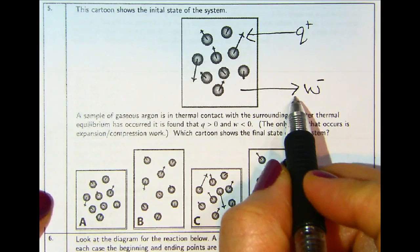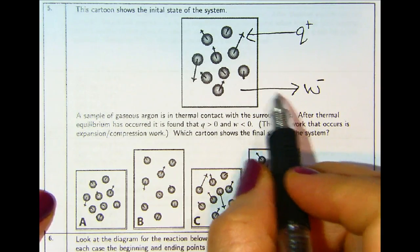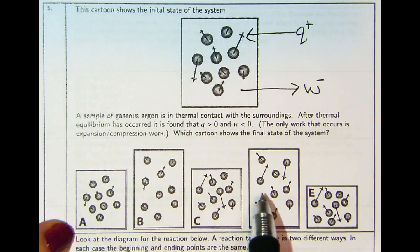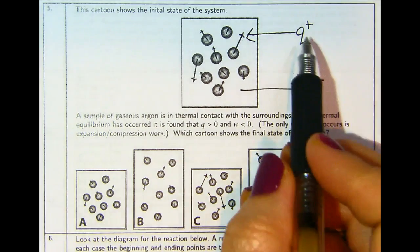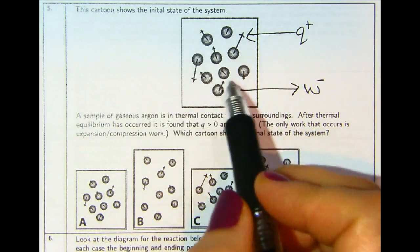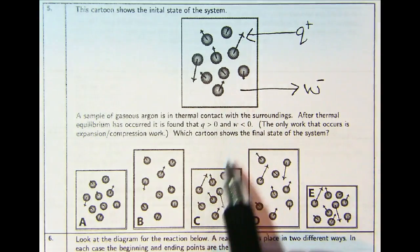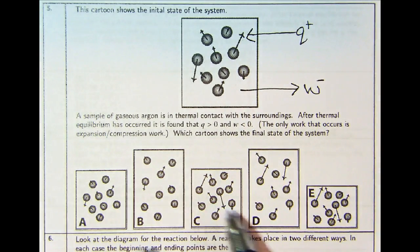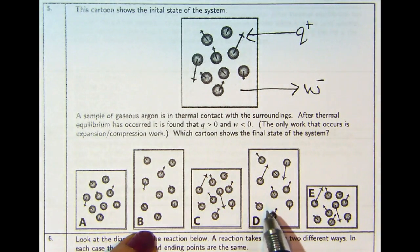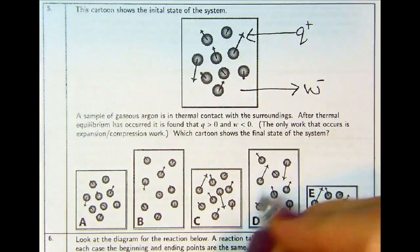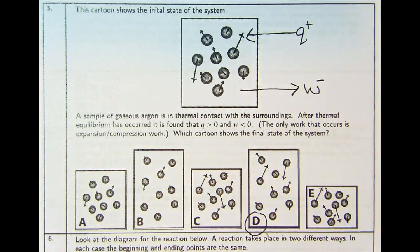So you're looking for an answer that has a larger volume. Some options have about the same volume, one has less volume, and some have more. It's down to B or D. Because it absorbed heat energy, the particles must have a greater magnitude of energy. We want to choose D because it has larger arrows than B. So D is the correct answer.